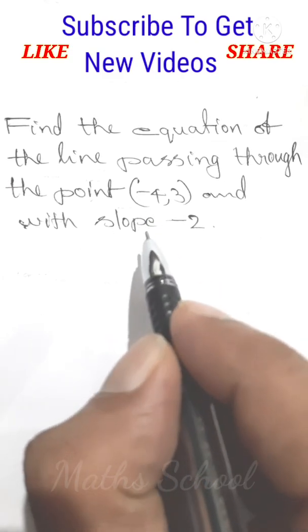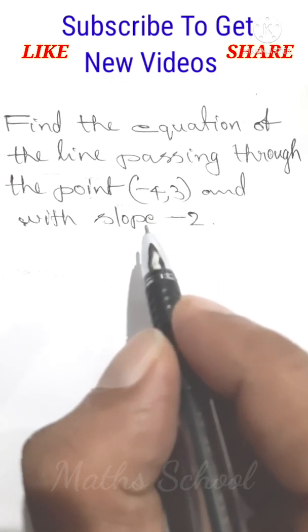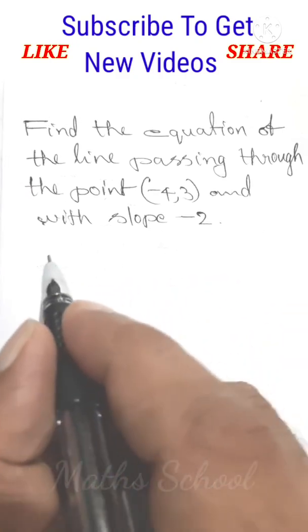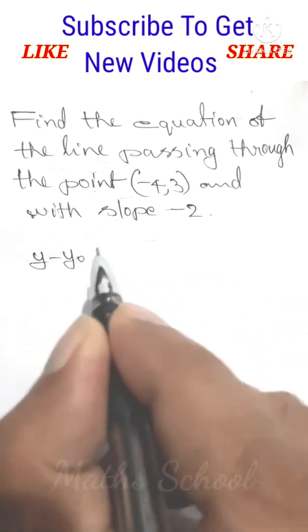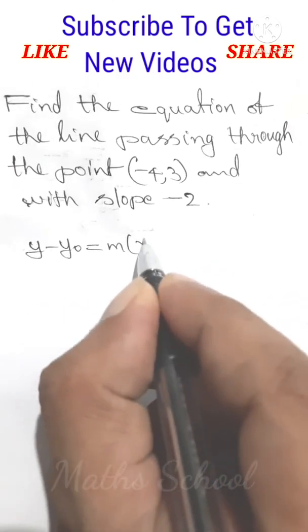This is the line that we have to use the point slope form. That is, y minus y0 equals m times x minus x0.